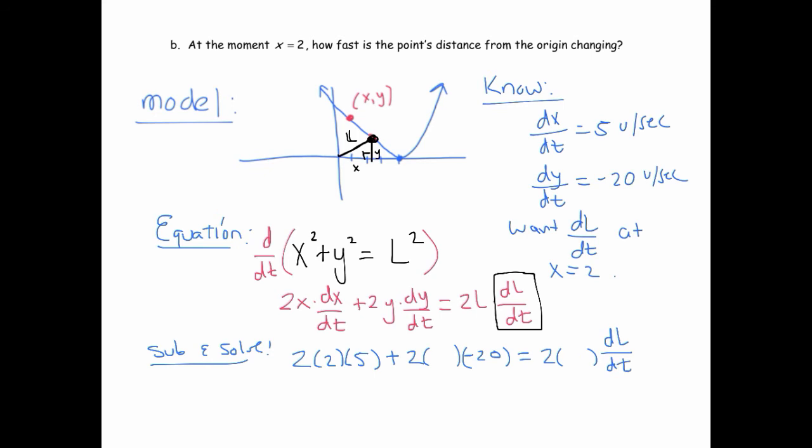Now, what is y at this instant? Well, when x is 2, remember this is the equation of the function. This is the function y = (x-4)². So at the instant x is 2, y is 2 minus 4 squared, which is negative 2 squared, which is 4. Alright, so y is 4.